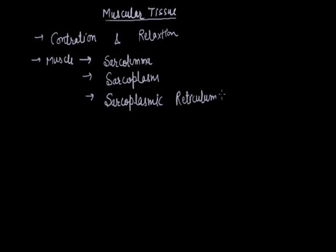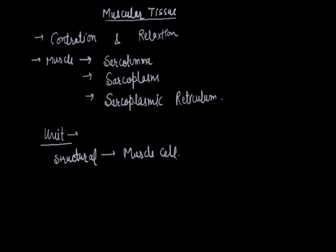We can also identify the units of muscular tissue. The structural unit of muscular tissue is the muscle cell, while the functional unit is the sarcomere. 'Sarco' stands for muscle and 'mere' for unit. The whole muscular tissue forms 45% of our body weight.